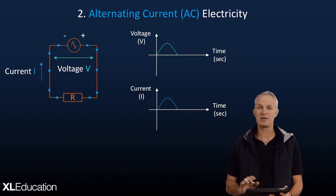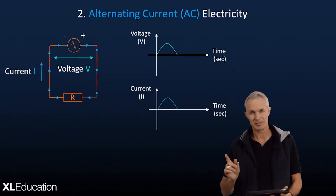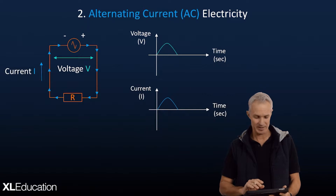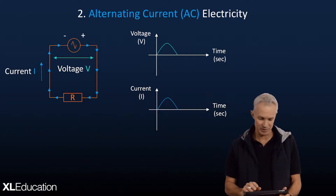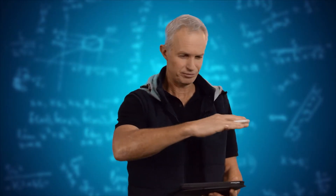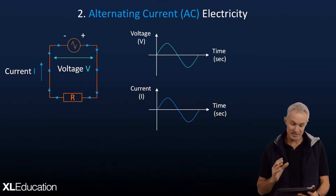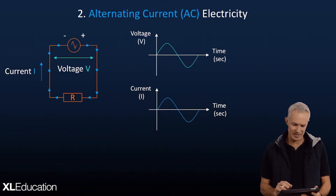Now something different happens — completely different to DC because we have a switch. The switch means the alternating current is going to go in the other direction; it alternates from one direction to the other. It's like the car reversing and then slowing down at the next light. The electrons are going backwards and forwards in the wire — they don't really travel very far, but nevertheless the energy does get there.